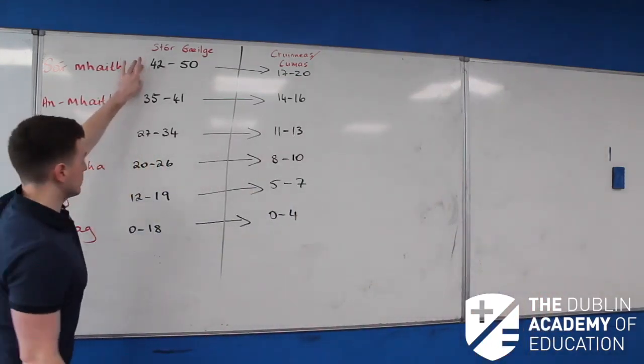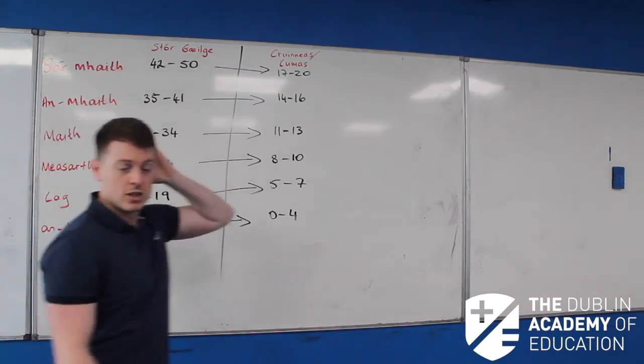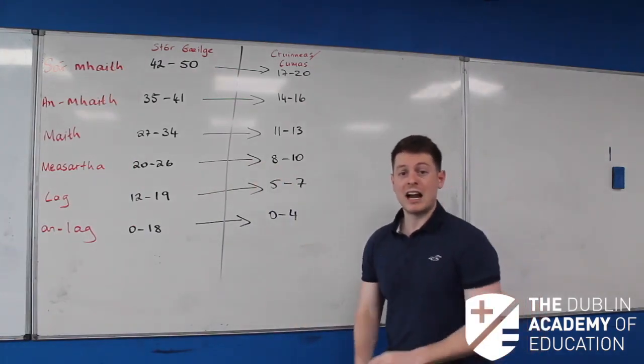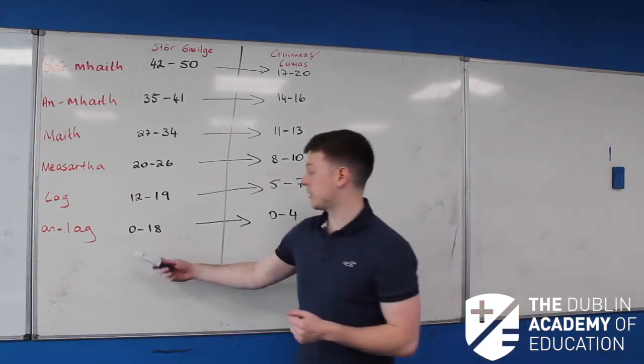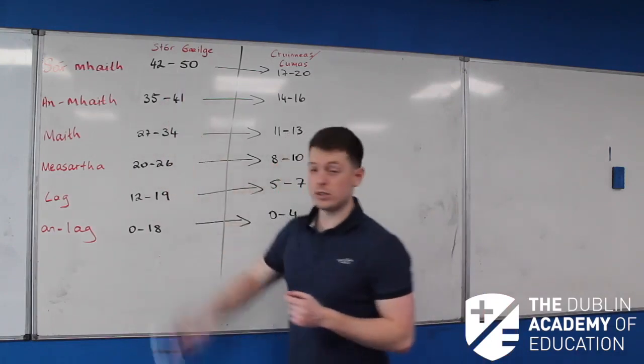So, up here, all the way down here, this is for our Stór Góelgá and our Cúmérsad. So our vocabulary, the words that we use and how we get them across. Are you using loads of hard words, saying them wrong, though I can't understand you, then you're going to be down here, you're using loads of hard words and you're saying them right, you're going to be up here.